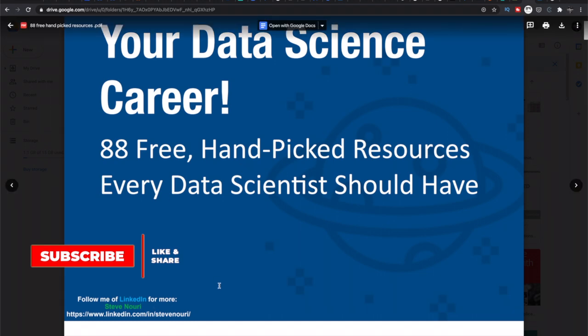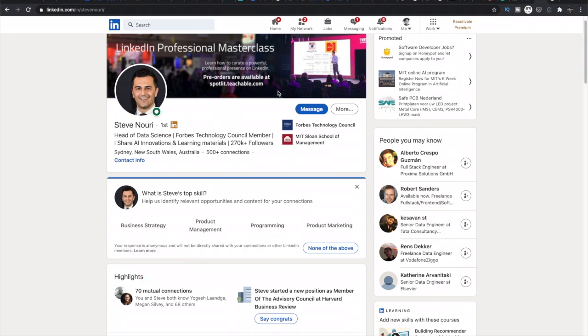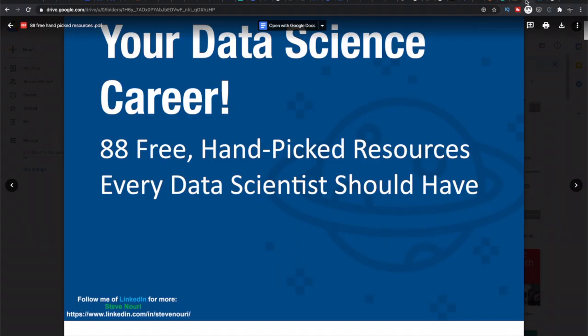He's the guy who is an expert in data science and artificial intelligence. You can find him on LinkedIn. His name is Steve Nouri. He's the head of data science, a Forbes Technology Council member, and he lives in Australia. He posts a lot of information about artificial intelligence, data science, and machine learning developments. If you really want to become a data scientist and AI expert, you must follow him on LinkedIn. Don't forget to send a request to him. He accepts your request—he's a very nice guy.